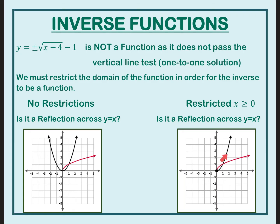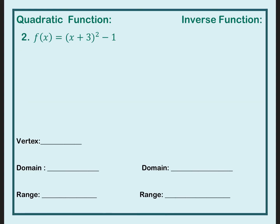We're going to restrict the domain to only half of the graph so that this is a reflection over y equals x. I can only look at half of my quadratic, starting at the vertex, going to the right. So we're going to find that inverse. First, rewrite it with y in place of f of x. Next, flip the x and y. Then the major step is to solve for y — we move the 1 over by adding 1 to both sides.